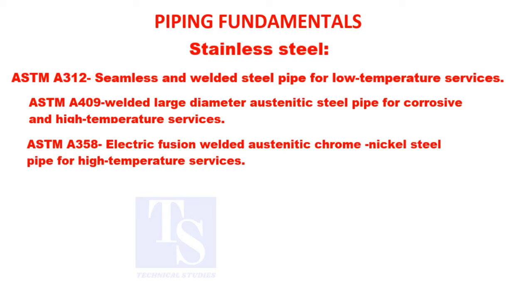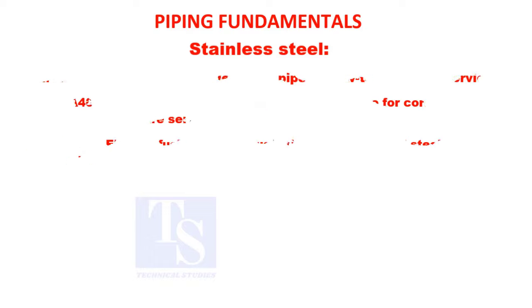ASTM A-691: carbon and alloy steel pipe, electric fusion welded, for low temperature services. ASTM A-358: electric fusion welded, austenitic chrome nickel steel pipe for high temperature services.